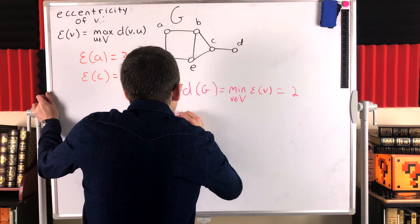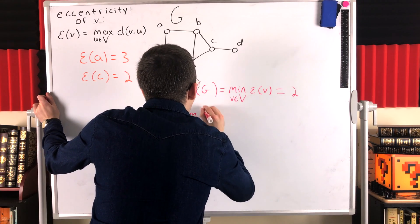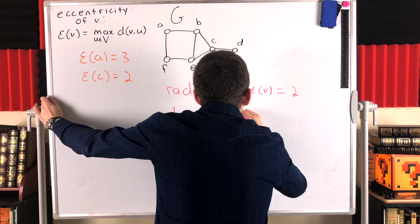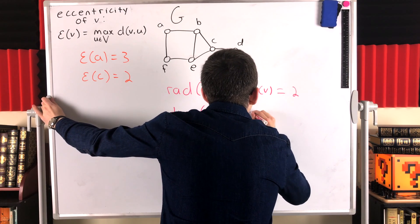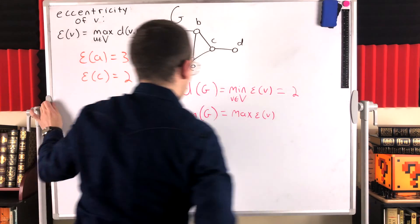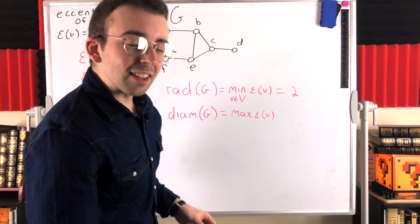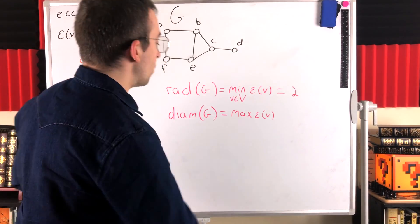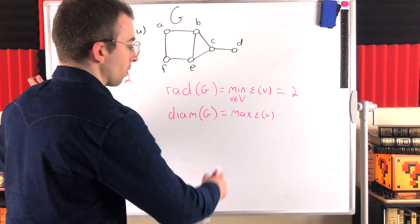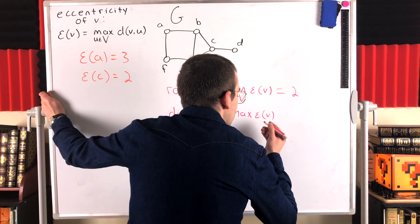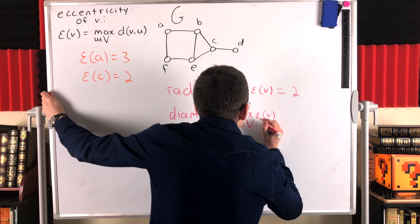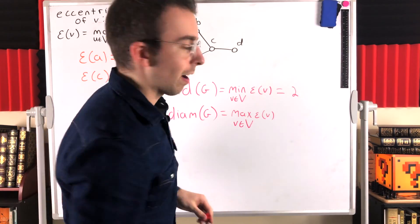Similarly, the greatest eccentricity — the maximum eccentricity of any vertex in the graph — is called the diameter of the graph. This is a more common term you might already be familiar with. You can also think of it as the greatest distance between any two vertices in the graph. We can define it as the maximum eccentricity of v taken over all vertices v in the vertex set of the graph.